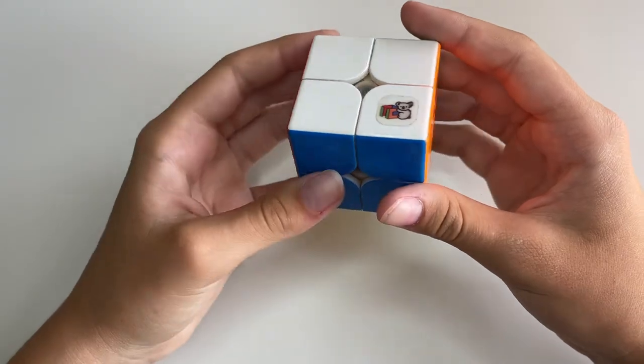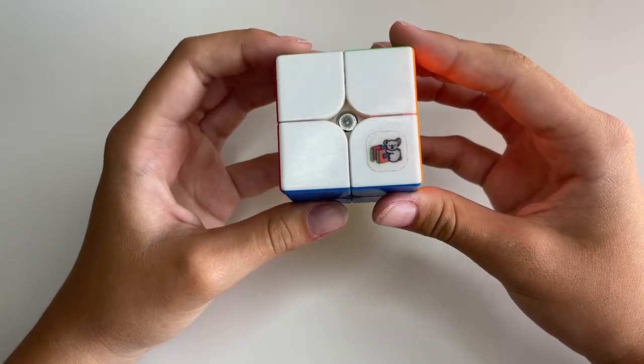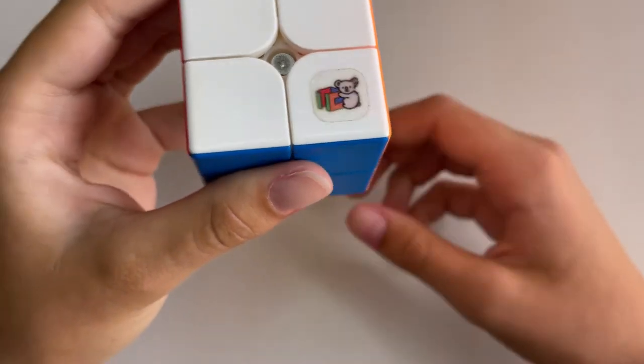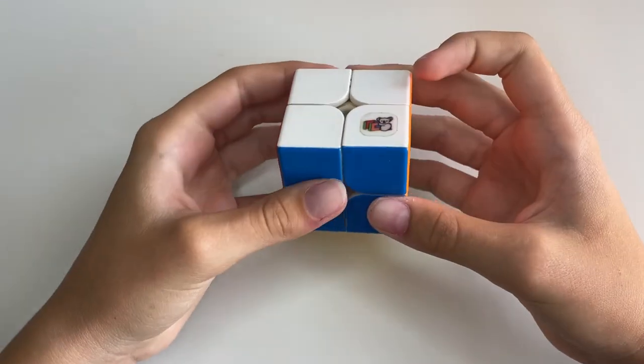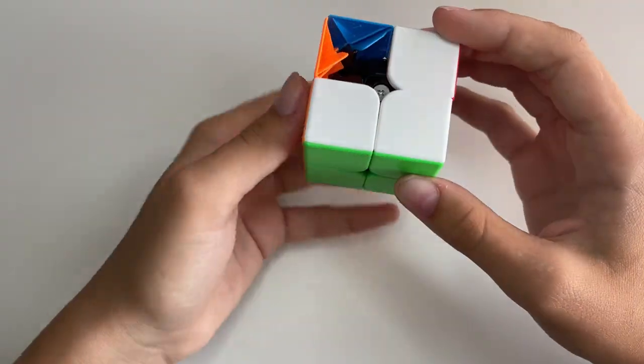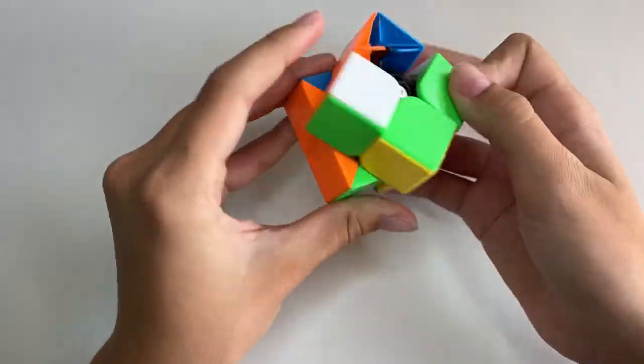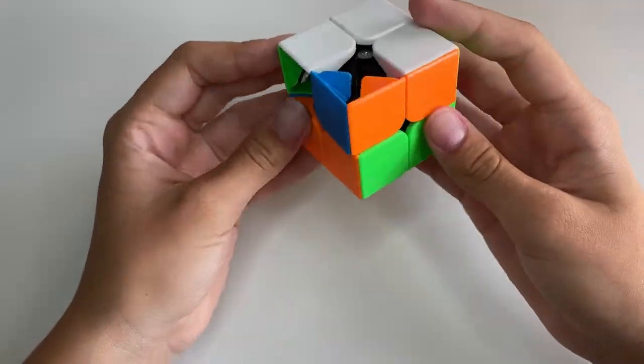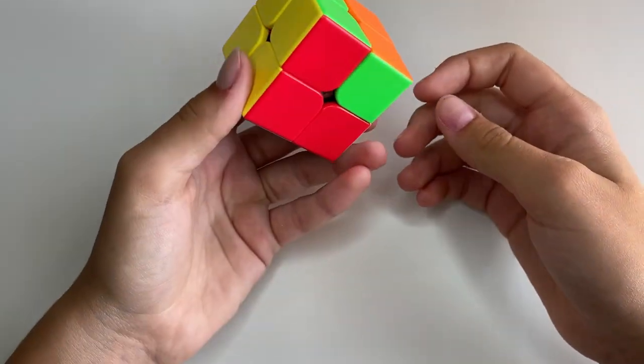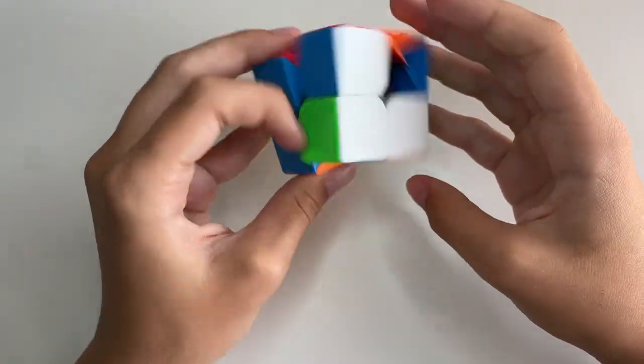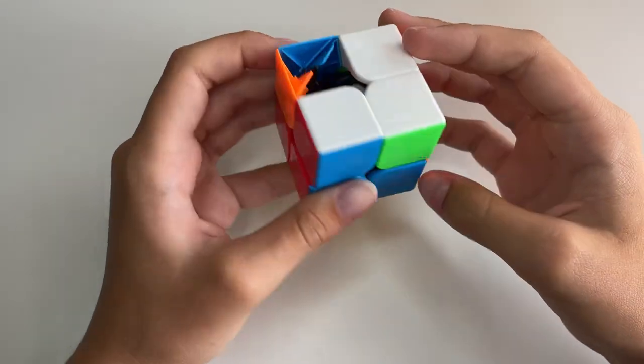The third 2x2 I got was the YJ YuPo V2M, and this has a little koala cubicle sticker. This is supposed to be one of my siblings' puzzles, but I ended up taking it since she never used it. I believe this is the MFJS 2x2. It still sounds a little gummy because there's lube in here that hasn't been used considering it's broken. A couple pieces popped off when I had it in my pocket, but other than that, it's a really great starting 2x2.